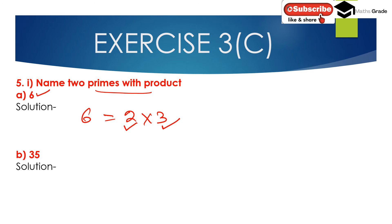Now the second part: find 2 prime numbers whose product is 35. We can write 35 as 5 multiplied by 7. Here both 5 and 7 are prime numbers. So 35 is the product of 2 prime numbers: 5 and 7.